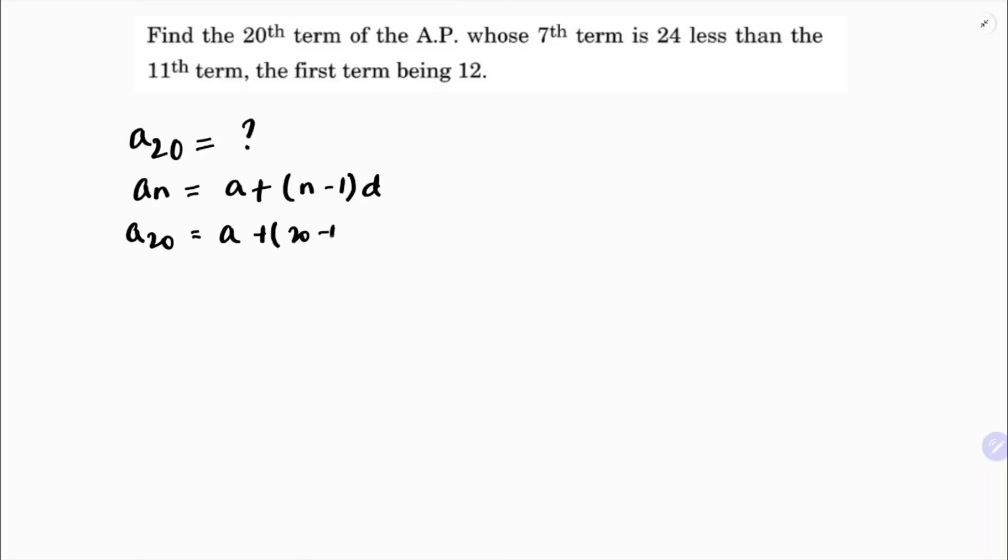So a20 = a + 19d. Now, they told us the 7th term is 24 less than the 11th term. The first term is also given as 12.